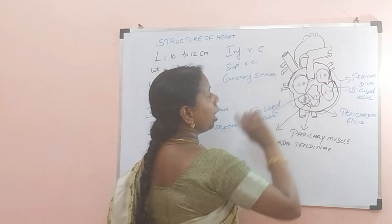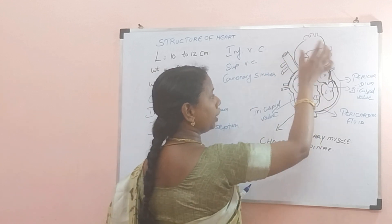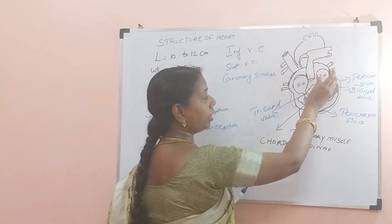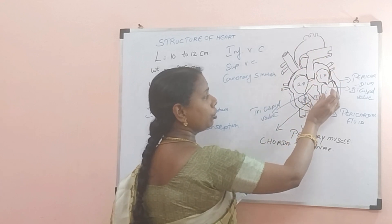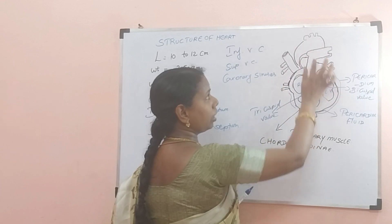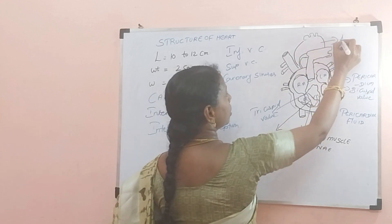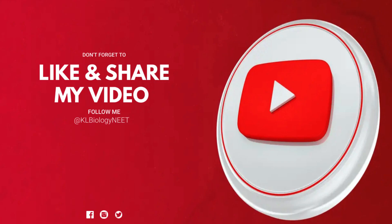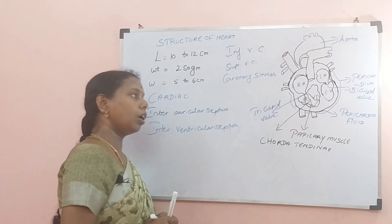On the left side, at the same time, the pulmonary vein from the lungs brings pure blood into the left auricle. This blood is then pumped into the left ventricle via the aorta and is supplied to the entire parts of the body. This is the structure of the heart.